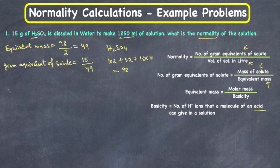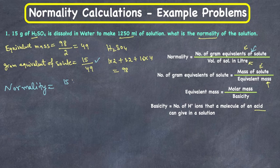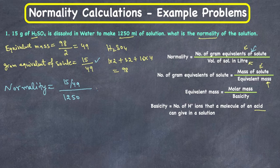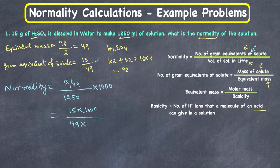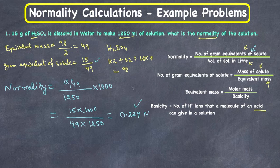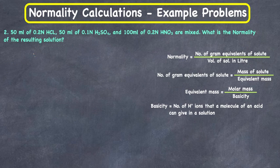Now let's calculate the normality. Normality = gram equivalents of solute / volume of solution in liters = (15/49) / (1250 ml × 1/1000). Rewriting: 15 × 1000 / (49 × 1250). After calculation, we get 0.229 N as the normality of the solution.